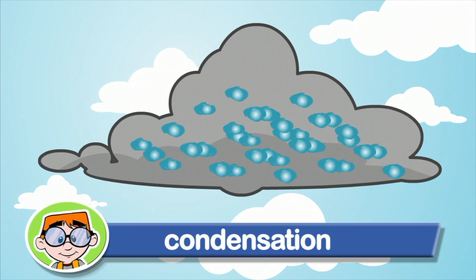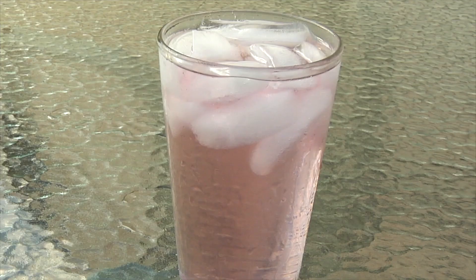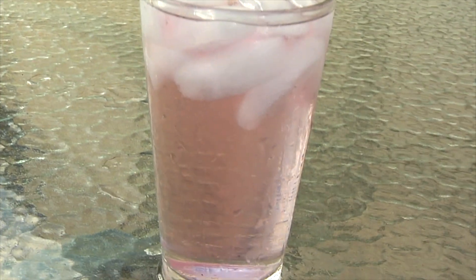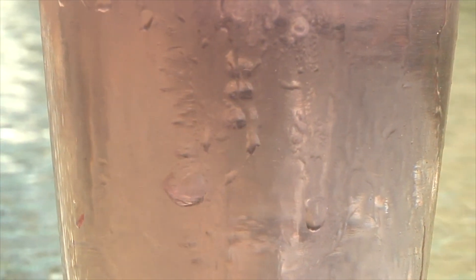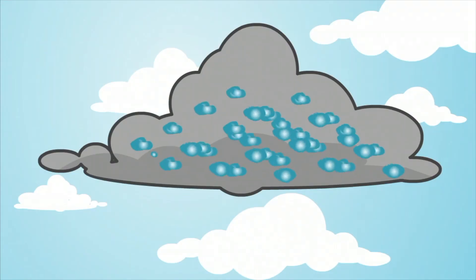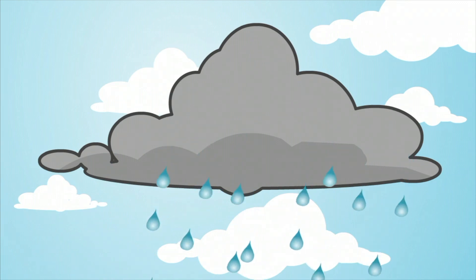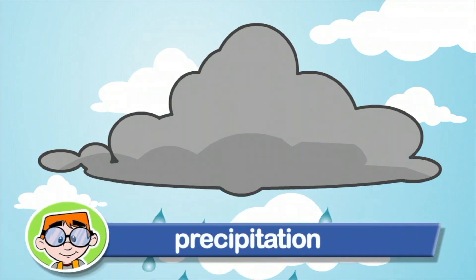Here's an example of condensation. When you pour a glass of cold water on a hot day, you'll notice that water forms on the outside of the glass. The water on the outside of the glass came from the air. Water vapor in the air turns back into a liquid when it touches the cold glass. That's condensation. If there's enough water in the clouds, the water will fall to the earth. We call it precipitation.